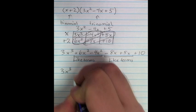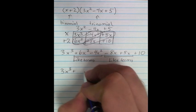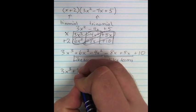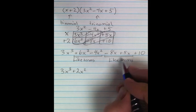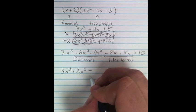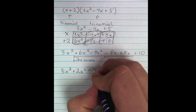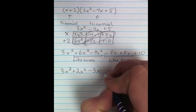3x to the third plus 6 minus 4 is 2x squared, and then negative 8 plus 5 is minus 3x, then plus 10.